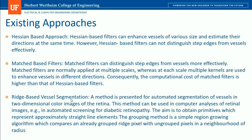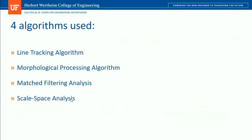The last existing approach is ridge-based vessel segmentation — a method for automatic segmentation of vessels in two-dimensional color retinal images, usable for automated screening of diabetic retinopathy. The aim is to obtain primitives representing approximately straight line elements, using a simple region-growing algorithm that compares already-grouped pixels with ungrouped pixels in the neighborhood of a specific radius. The four algorithms I will explain today are: line-tracking, morphological processing, matched filtering analysis, and scale-space analysis.